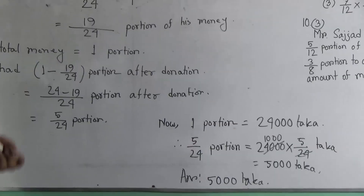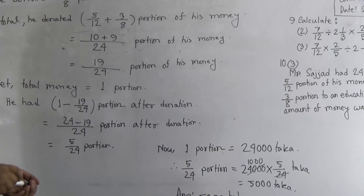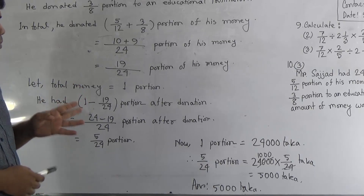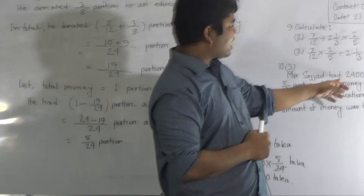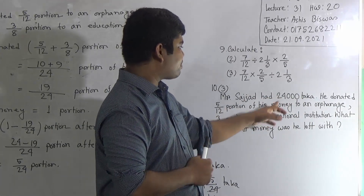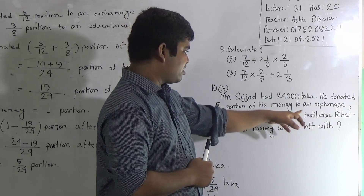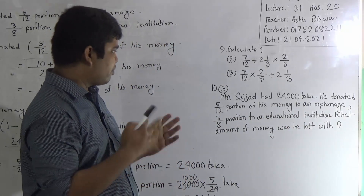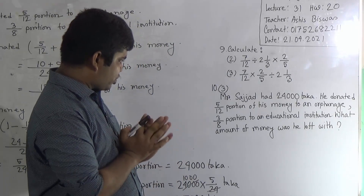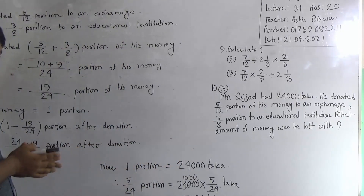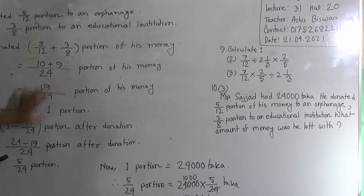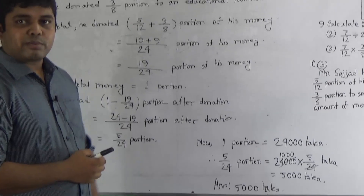Dear student, at the beginning of the class I told you that this math is very, very important because in our next class I shall give you a CBQ based on this word problem. Please notice: Mr. Sajjad had 24,000 taka. He donated 5/12 portion to an orphanage and 3/8 portion to an educational institution. The A number question will be: in total, how much portion did he donate? B number question: after donation, how much portion of money does he have? And C number question: what amount of money was he left with? This is the answer of A, this of B, and that of C. I hope you have understood.